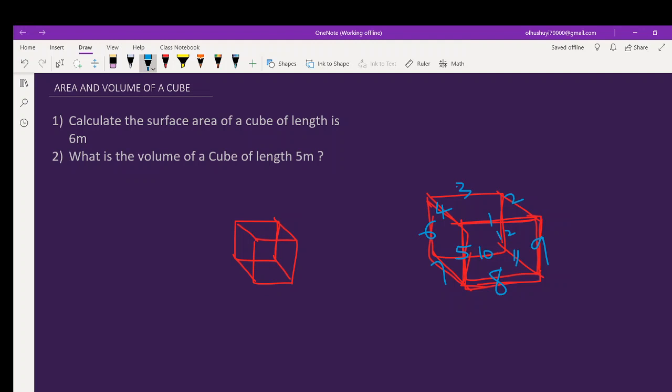For the apex, or you call it the vertices, the vertices, they have one, two, three, four, five, six, seven, eight—so it has eight vertices.